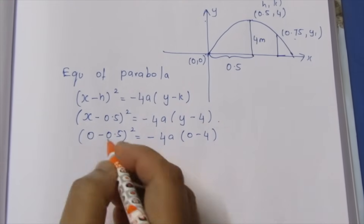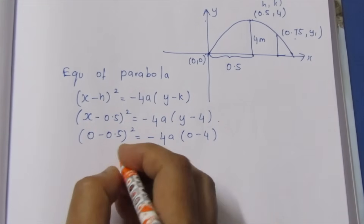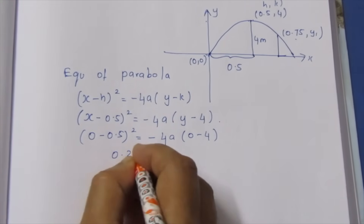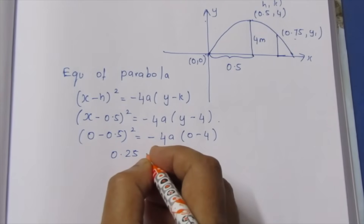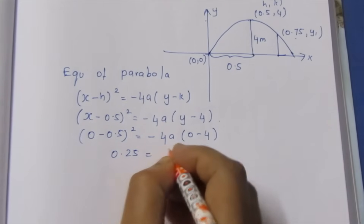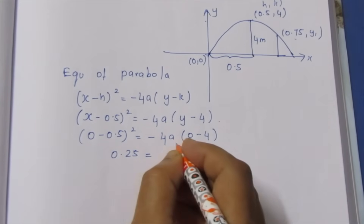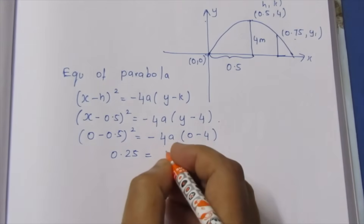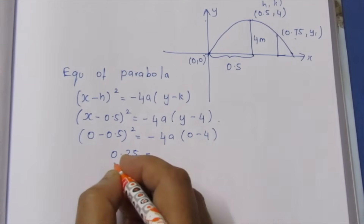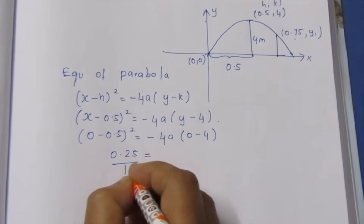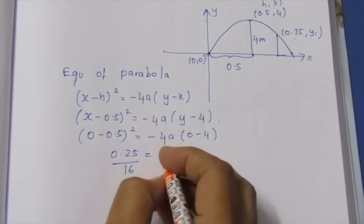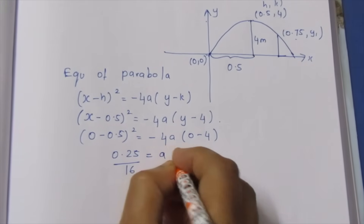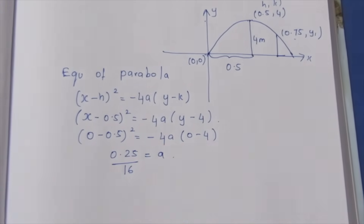This gives 0.25 equal to minus 4a into minus 4, which is 16. So 0.25 equals 4a into 4, giving us a equals 0.25 divided by 16, which means a equals 1 by 16.